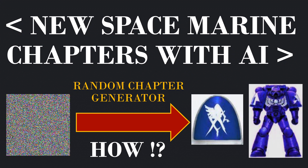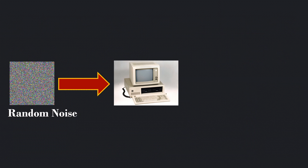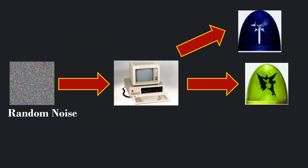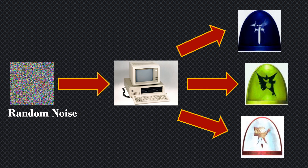But how can we do this? In this video I'm going to tell you how. As I've said, we take random noise and put it through a computer which then can generate new chapters. It sounds simple, but I'm going to explain in a little bit more detail — but not too much — how we actually do this, and then I'll show you loads of new chapters that we've generated.